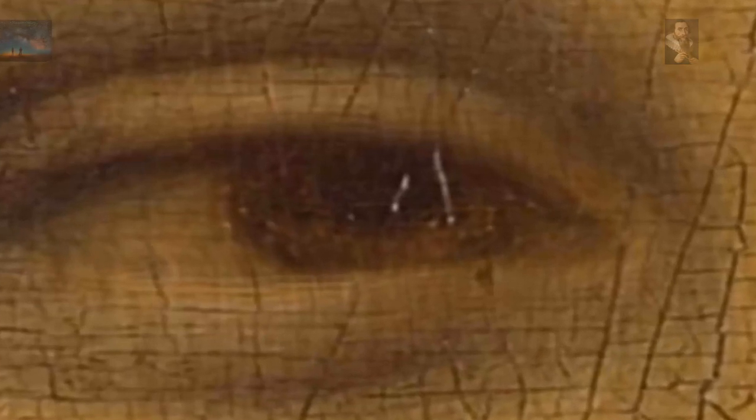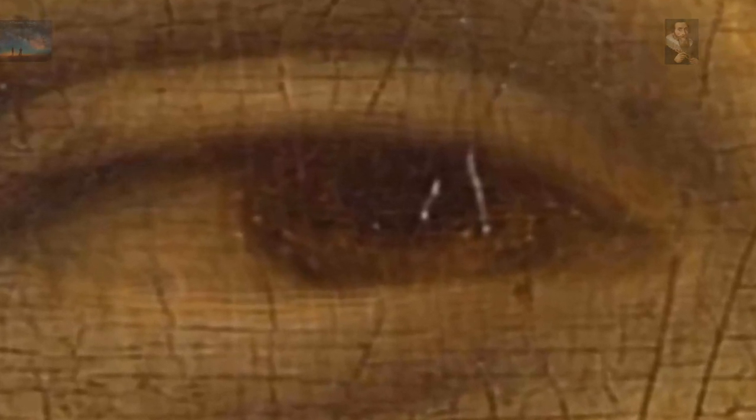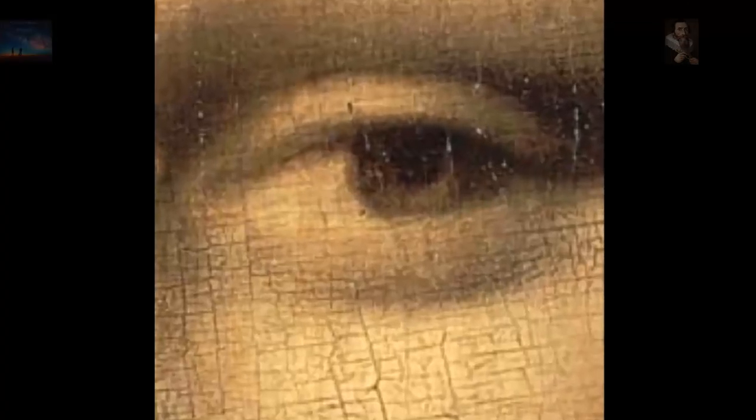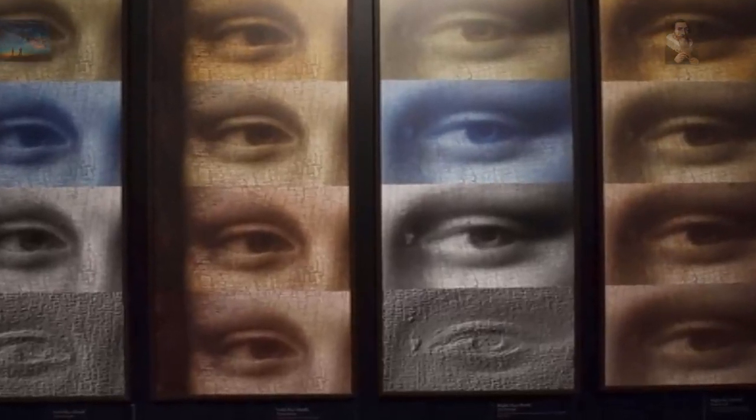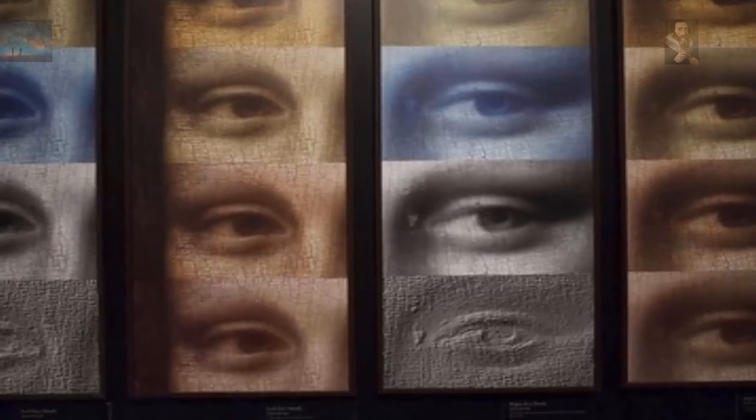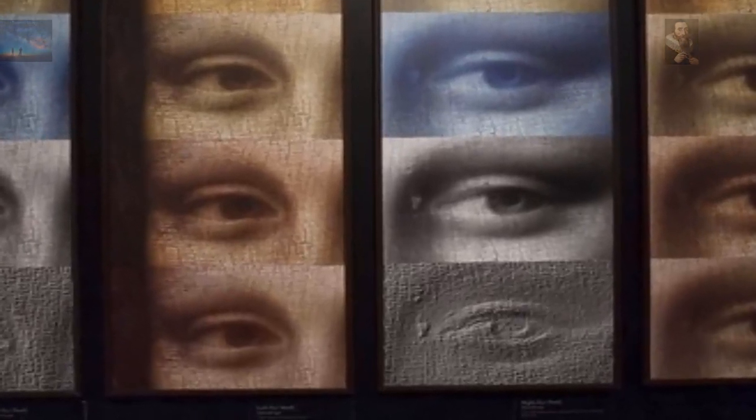Experts say that barely distinguishable letters and numbers represent something of a real-life Da Vinci code. In the right eye appear to be letters L, V, which could well stand for his name, Leonardo Da Vinci, while in the left eye there are also symbols, but they are not as defined.